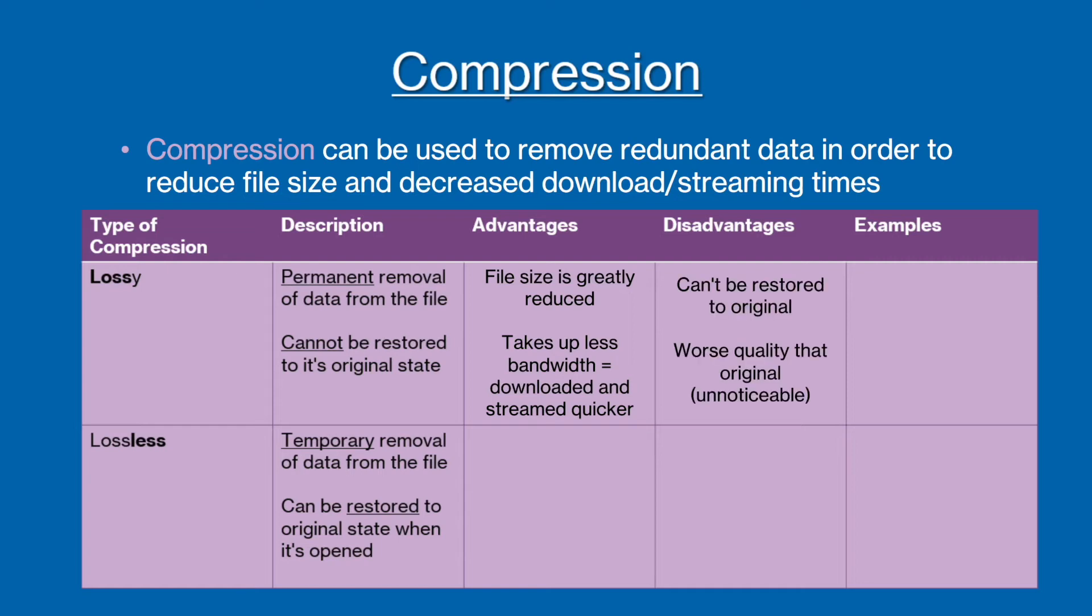However, as it involves a permanent reduction, the file cannot be restored back to how it was originally. The removal of data also means that the quality will be worse than it was originally, as some of the data is lost. However, the difference is likely to be unnoticeable by the human eye. Examples of file formats compressed with lossy compression include mp3 audio files and jpeg images.